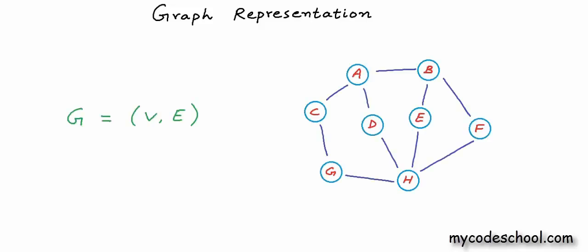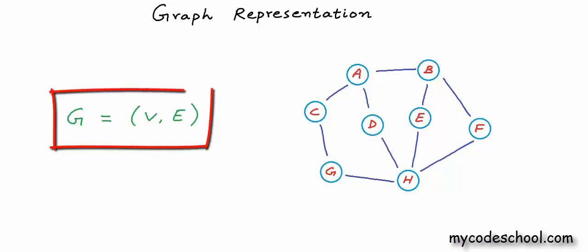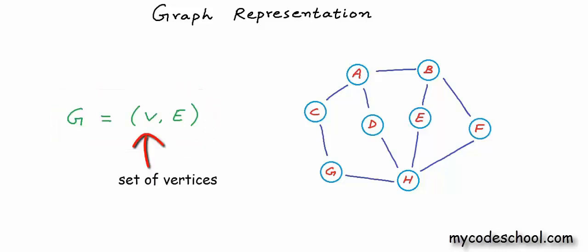A graph, as we know, contains a set of vertices and a set of edges, and this is how we define a graph in pure mathematical terms. A graph G is defined as an ordered pair of a set V of vertices and a set E of edges.